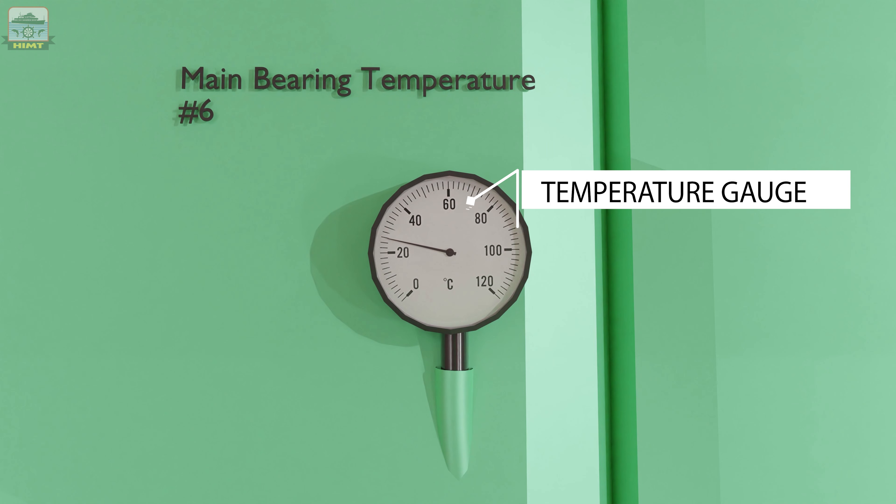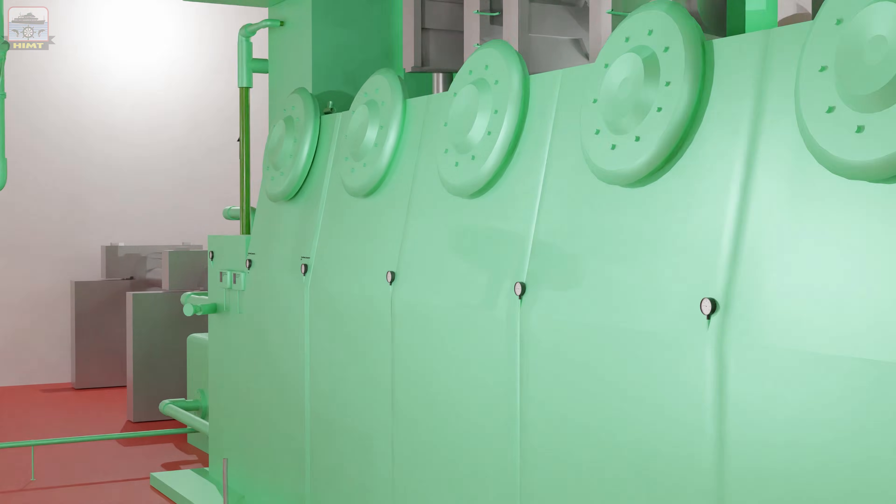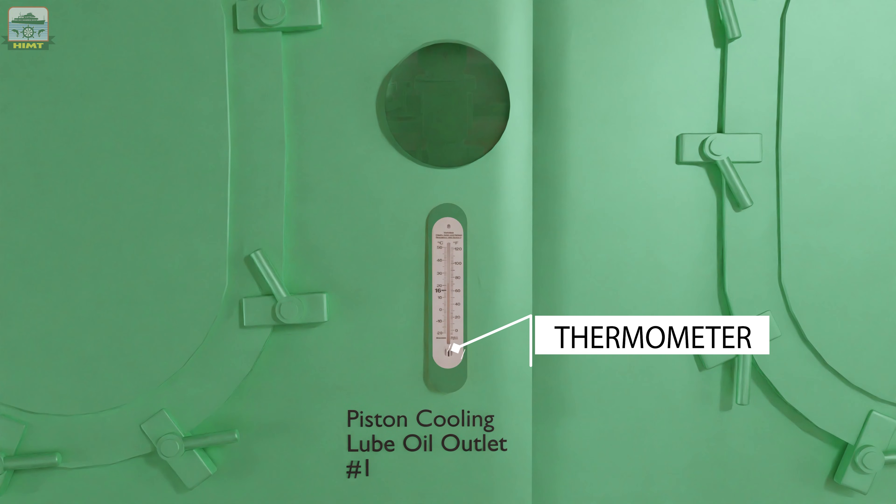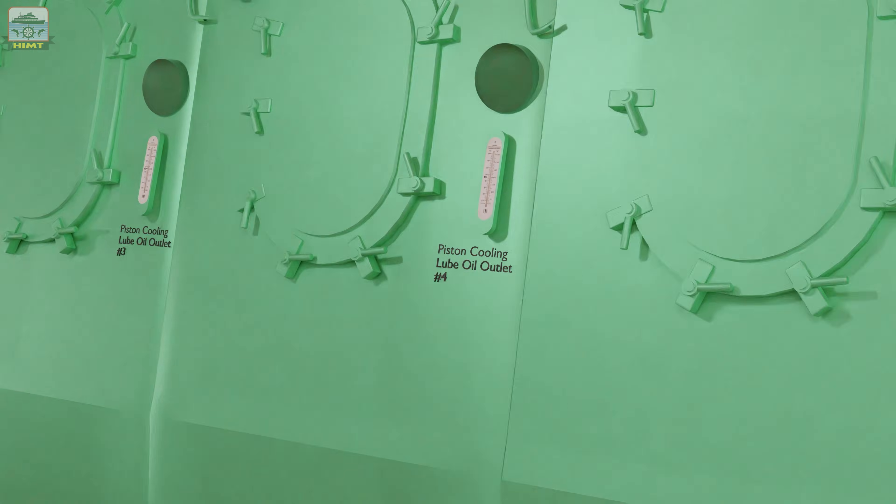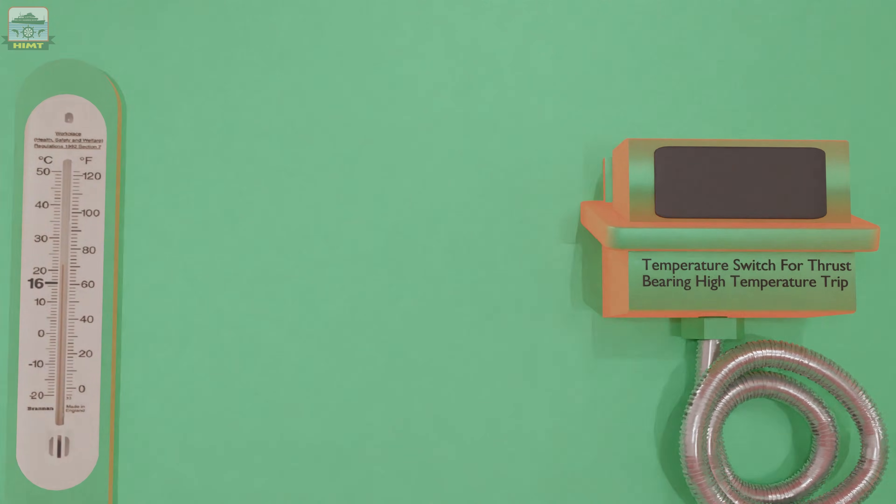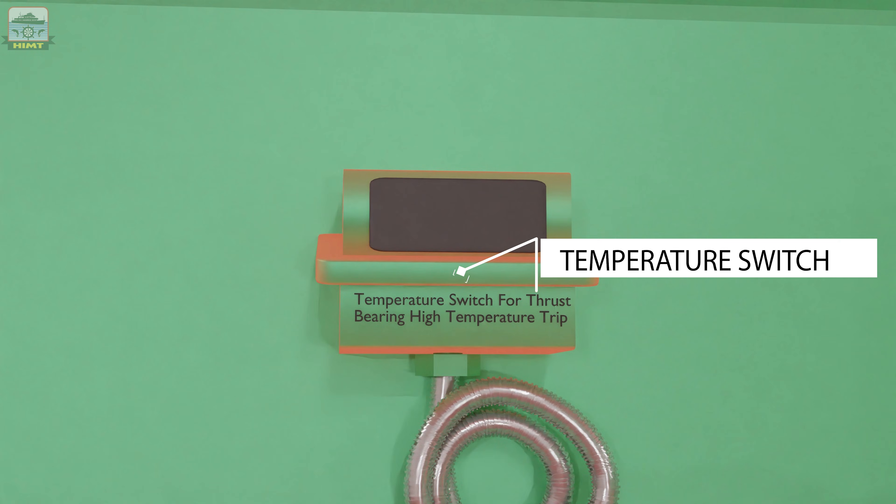Temperature gauges for all main bearings, thermometers at the lube oil outlet from the piston cooling oil, a thermometer for the thrust bearing, and a temperature switch to shut down the engine at extra high temperature of the thrust bearing.